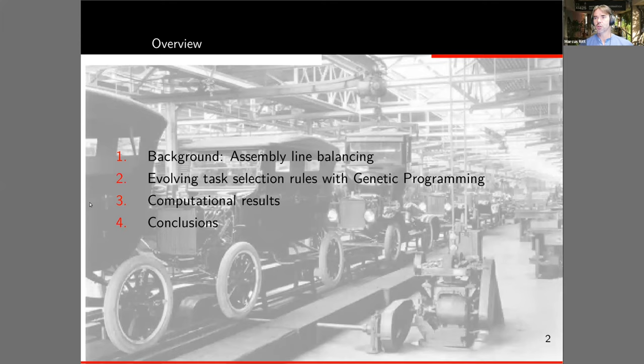I want to give you a short background in assembly line balancing, which is our main application. In the background you can see the production line of a Ford Model T, so this is basically the assembly line you may keep in mind. Then I will talk quickly about how we evolve task selection rules with genetic programming for this problem and present some computational results.